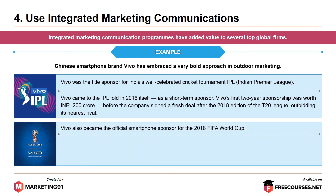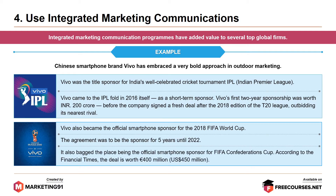Vivo also became the official smartphone sponsor for the 2018 FIFA World Cup. The agreement was to be the sponsor for five years until 2022. It also backed the FIFA Confederations Cup as the official smartphone sponsor. According to the Financial Times, the deal is worth $450 million.